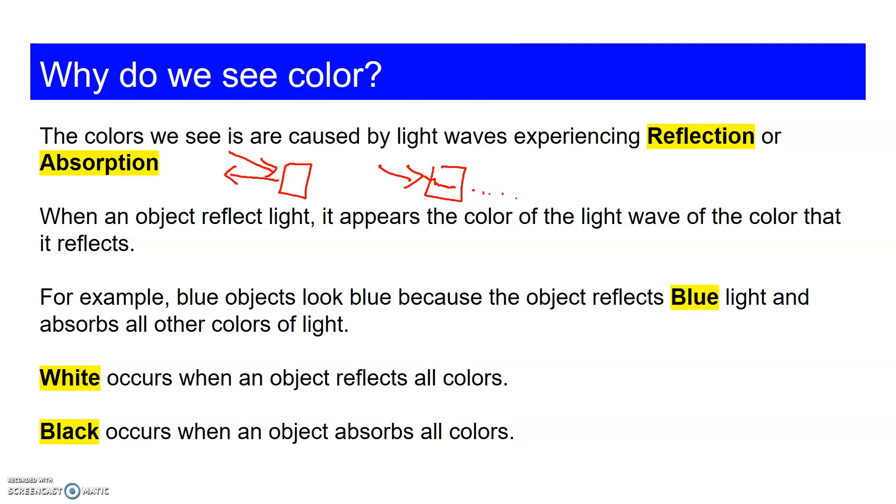In terms of physics, white and black are not colors. Remember, color is all about having a specific wavelength that you can attribute to that color. White is a mixture of all colors and black is the absence of colors. Therefore, white and black are not colors.